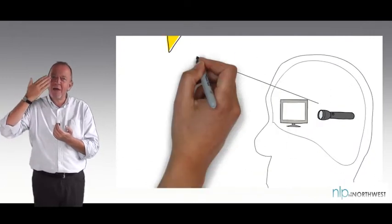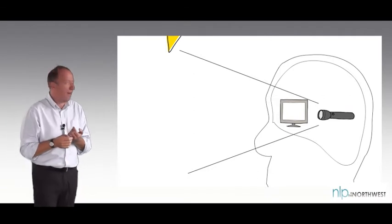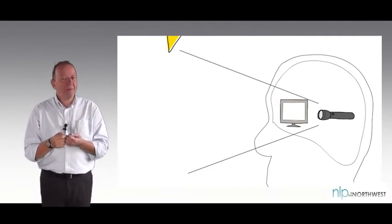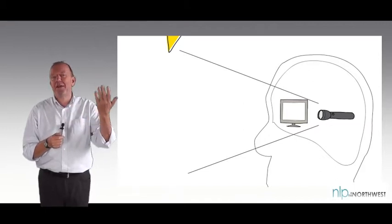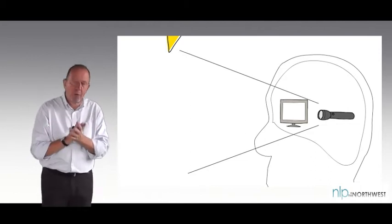It's almost like they're on transparencies and we look at the world through them, but we're not always consciously aware that they're there. Or we might be imagining something bad happening. We might be imagining not being able to answer questions, or maybe we imagine tripping up on our way into the interview.